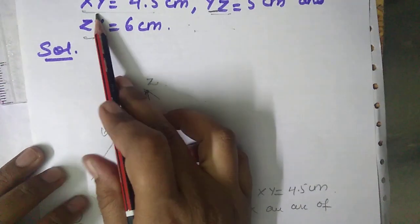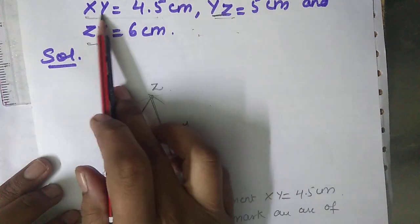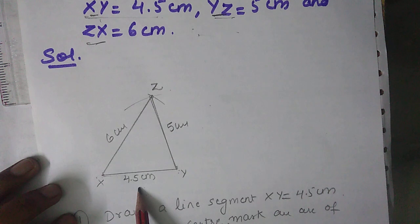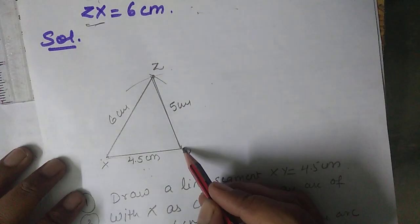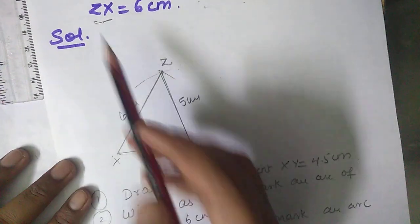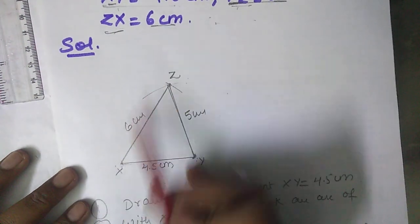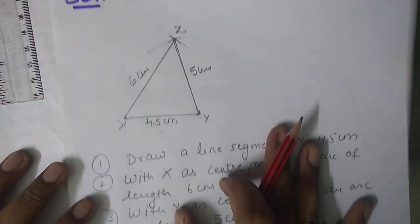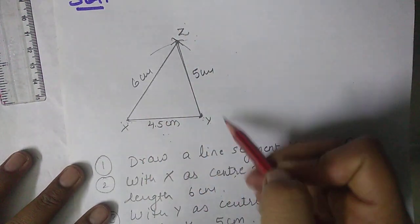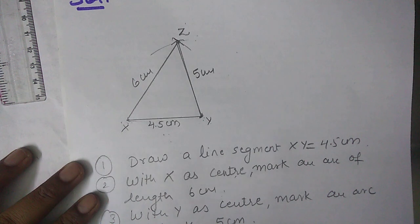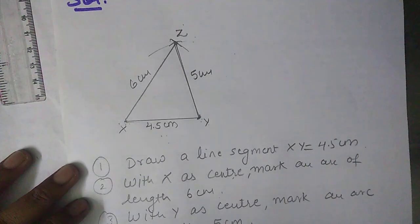To summarize: I took XY as the base at 4.5 centimeters, then with Y as center marked an arc of 5 centimeters, and with X as center marked an arc of 6 centimeters. These two arcs intersect at Z. I joined X to Z and Y to Z to get the required triangle XYZ. The remaining questions of exercise 10.2 are of the same type, so those you have to do yourself.